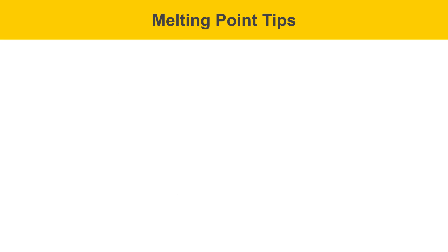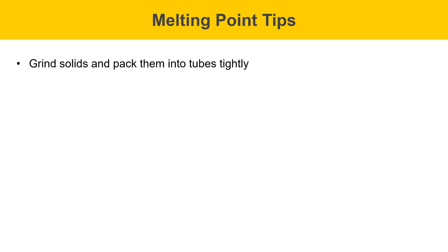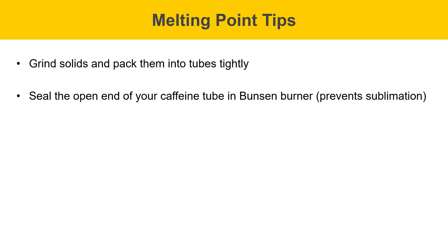This slide talks about some melting point tips. Solids should be ground up and packed into tubes tightly. It's important that there aren't air gaps between the particles of solid, because air gaps are insulating, and you really want a tight-packed tube of solid. In the experiment that we're doing this week, we're going to need to seal the end of the capillary tube that contains caffeine. We're going to do that by heating the end in a Bunsen burner.